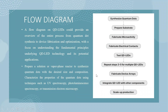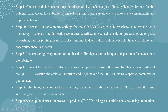This is the flow diagram of QD LEDs, which has eight steps: first, synthesize quantum dots; second, prepare substrate; third, fabricate micro activity; fourth, fabricate electrical contacts; fifth, test QD LEDs; sixth, repeat steps three to five for multiple QD LEDs; seventh, fabricate device arrays; and eighth, integrate QD LEDs with other components and scale up production. The flow diagram provides an overview of the entire process from quantum dot synthesis to device fabrication and optimization, with a focus on the fundamental principles underlying QD LED technology and its potential applications.